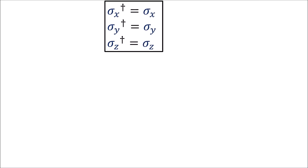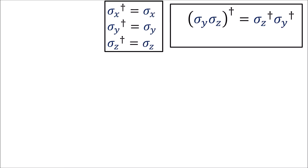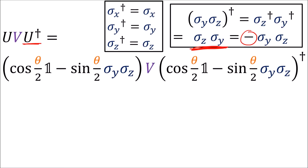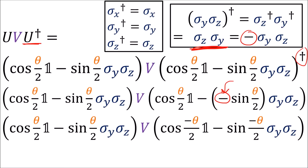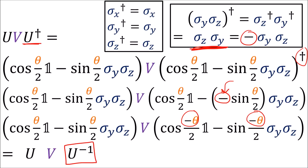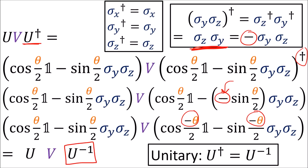Since the sigma matrices are Hermitian and equal to their own daggers, the dagger applied to a pair of them just swaps their order, which is the same thing as introducing a negative sign. So this is just the U matrix but with the rotation angle working in the opposite direction — so it's really U inverse. Since U dagger equals U inverse, we call U a unitary matrix.